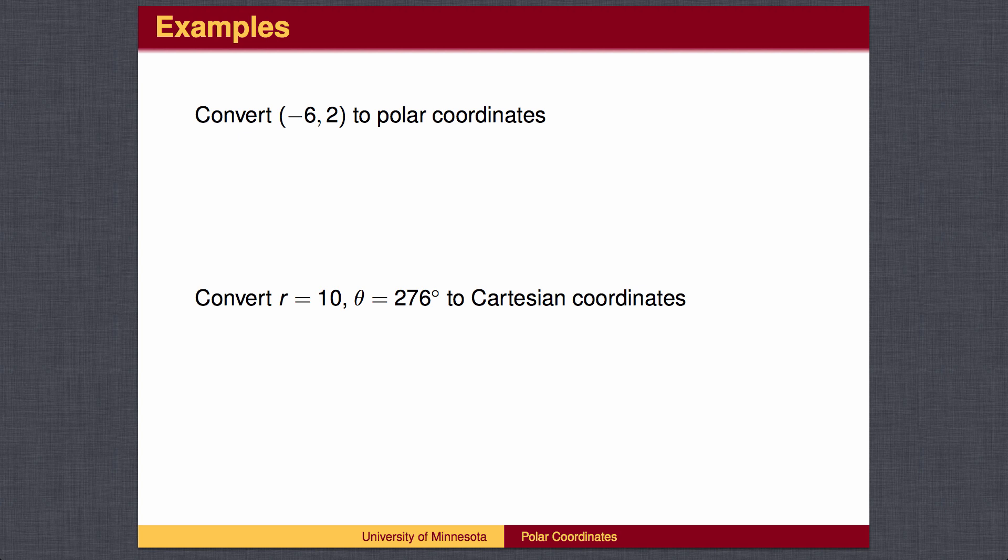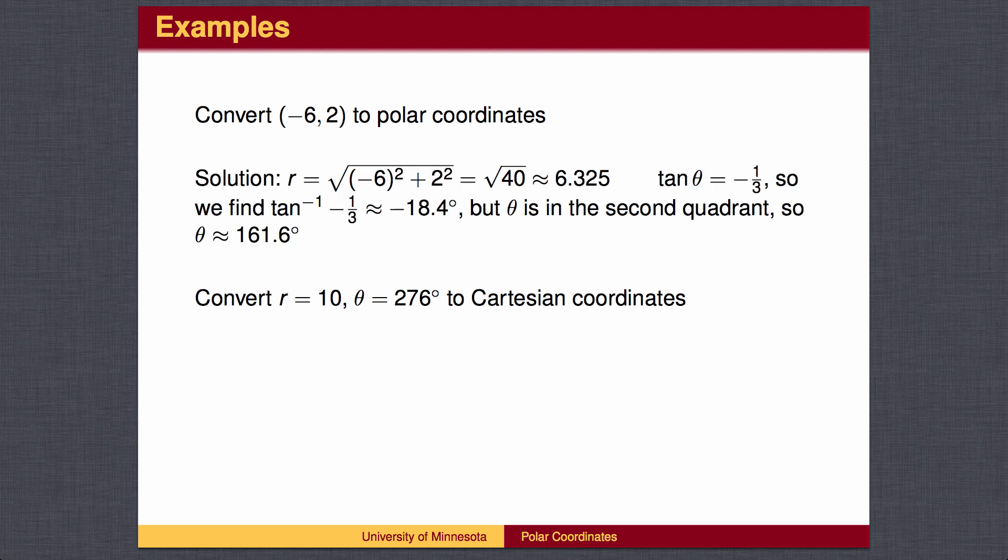Here are two examples. You may wish to pause the video to work these out on your own. Converting to polar coordinates, know that the ordered pair is in quadrant 2, so the angle should be between 90 degrees and 180 degrees. Your calculator will give you an angle of negative 18.4 degrees, which is a fourth quadrant angle. To find the second quadrant angle, subtract 18.4 degrees from 180 degrees. The conversion from polar coordinates to rectangular coordinates is straightforward.